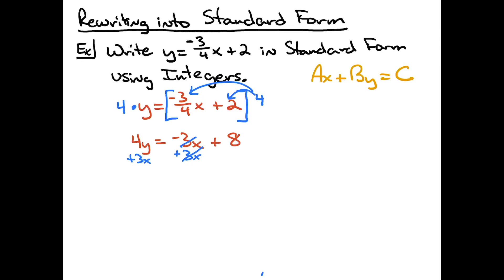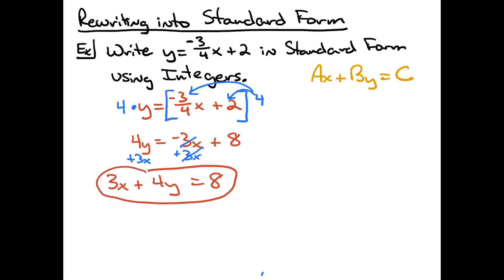I'm going to choose to put the three-x first and then plus four-y, because that's what standard form is — the x term first, then the y term — and then equals eight. So standard form is three-x plus four-y equals eight. A little bit of algebra manipulation there: multiplying through to get rid of the fractions and then rewriting so that you have the x term plus the y term equal to a constant.